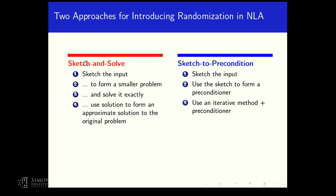The sketch-and-solve approach, which came in the first paper by Michael Moni and Petros Lineas, works roughly as follows: you have an input, you sketch the input, use that to form a smaller problem, solve the problem exactly, then use that solution to form a solution to the original problem and reason about how good that solution is.